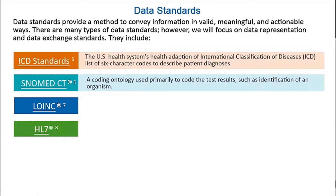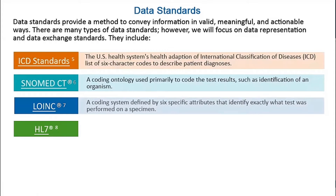One reason to use a SNOMED-CT code is the identification of an organism or description of a specimen type from test results. LOINC is a coding system that is defined by six specific attributes that identify what test was requested or performed.